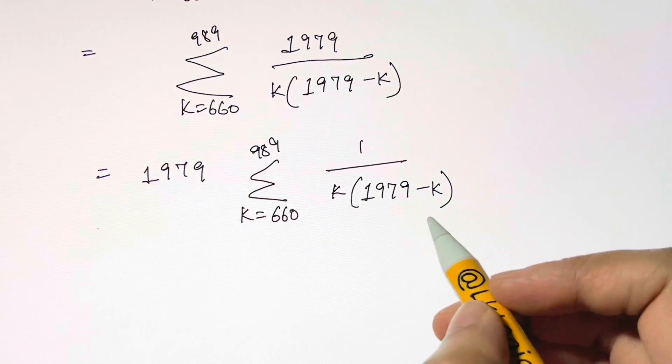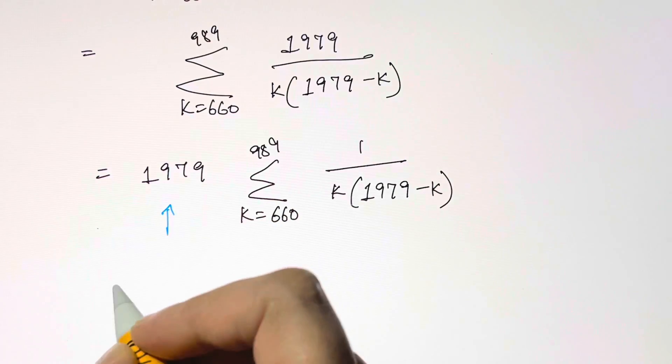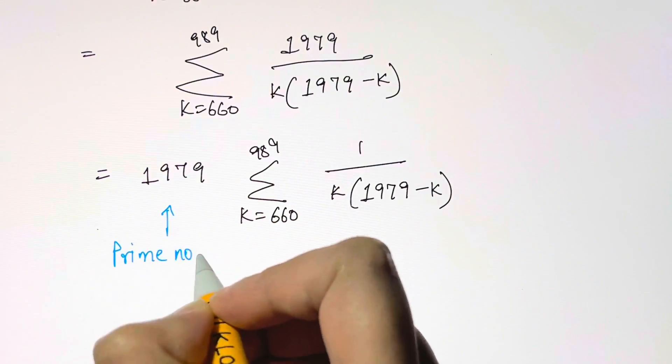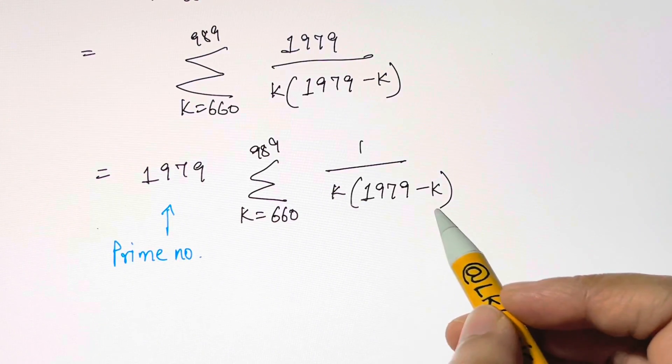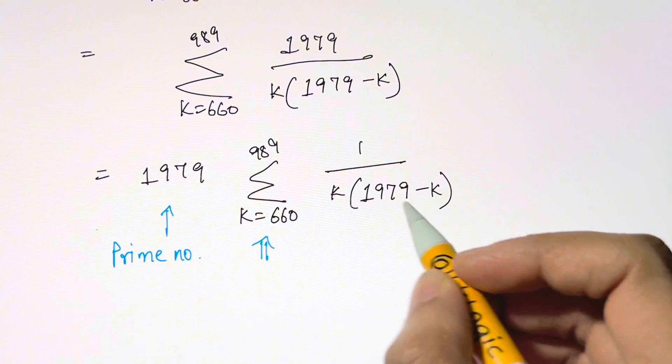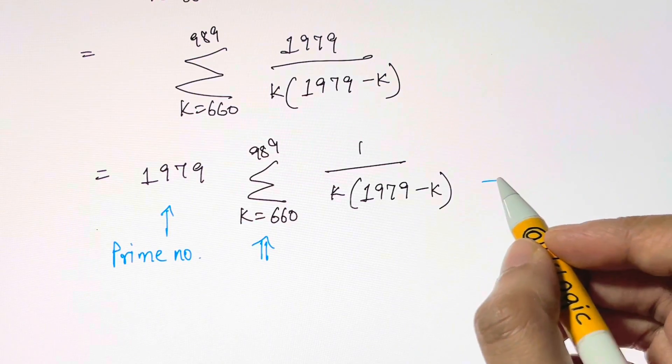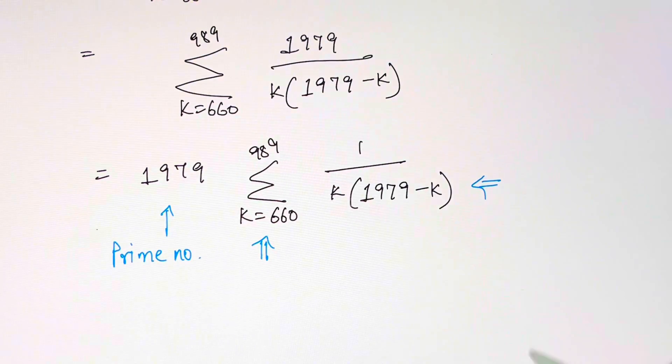Now if we really do the summation, notice that 1979 is actually a prime number. So all the terms in the denominator, k times 1979 minus k ranging from 660 to 989, do not contain the prime factor 1979.